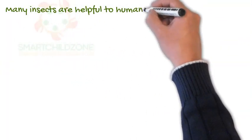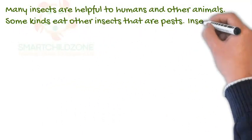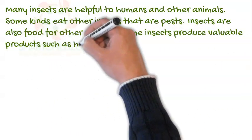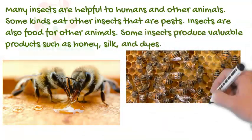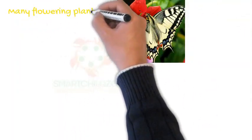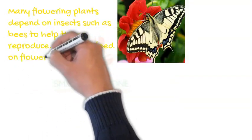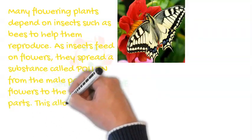Many insects are helpful to humans and other animals. Some kinds eat other insects that are pests. Insects are also food for other animals. Some insects produce valuable products such as honey, silk, and dyes. Many flowering plants depend on insects such as bees to help them reproduce. As insects feed on flowers, they spread a substance called pollen from the male parts of flowers to the female parts, which allows the female parts to make seeds.